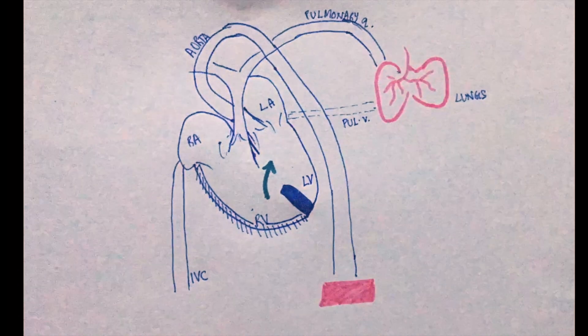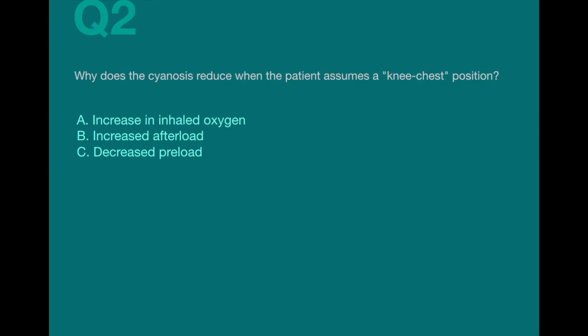Question 2. Why does the cyanosis reduce when the patient assumes a knee chest position? Option A. Increase in inhaled oxygen. Option B. Increased afterload. Option C. Decreased preload.